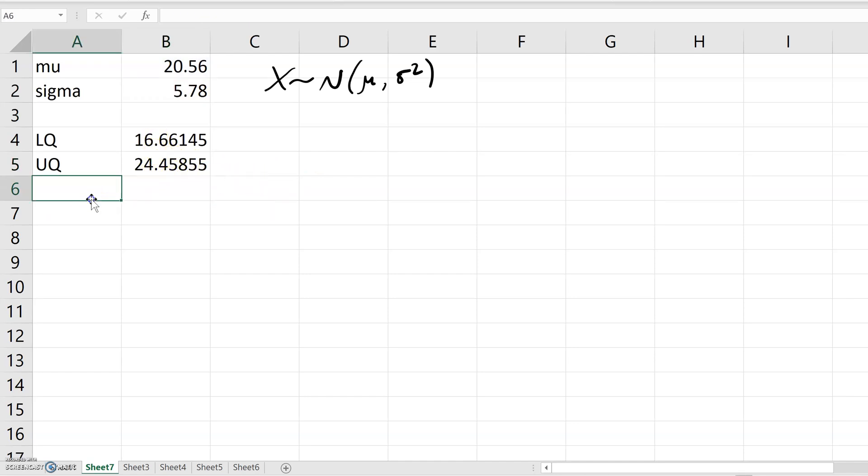So the lower quartile and upper quartile for that random variable. Interquartile range is just the difference between the two. These all depend on mu and sigma. Or at least lower quartile and upper quartile depend on mu. Interquartile range just depends on sigma.